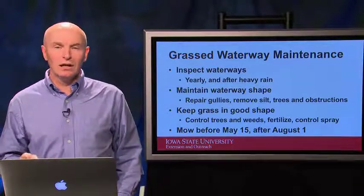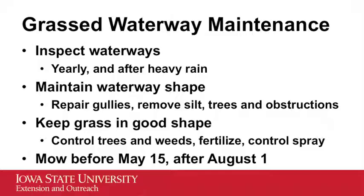So what do we need to do to maintain these waterways? They need to be inspected yearly, and more than that, after every heavy rainfall event to look for signs of maintenance issues. The grass and the shape of the waterway both have to be maintained. Anytime you see gullies forming, you need to repair them. If there's silt accumulating, it needs to be removed. If there are any obstructions in the waterway — things like trees or hay bales left in the waterway — they could obstruct the flow of water and need to be removed.